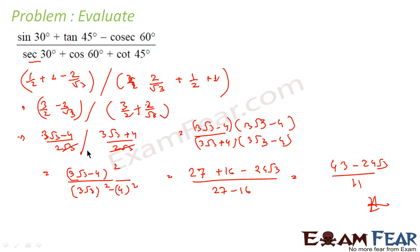And that is my rationalized answer. It is always good to give the rationalized answer. We have just put the values of sin 30°, tan 45°, cos 60°, sec 30°, cot 45° and solved it.